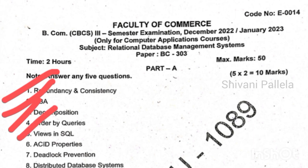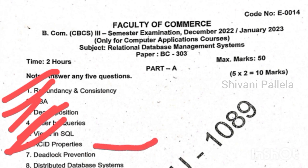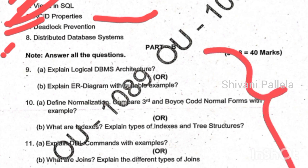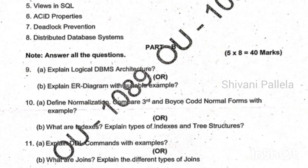Other two-mark topics include decomposition, order-by queries, views in SQL, ACID properties, deadlock prevention, and distributed database systems. If you have prepared with the long questions I have given, then you can automatically attempt the short questions too. In the ninth question, both questions are from unit number one.